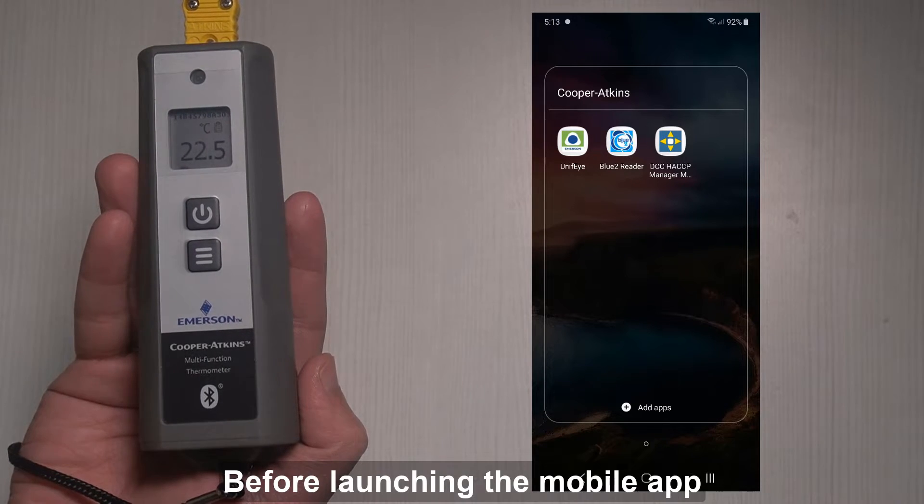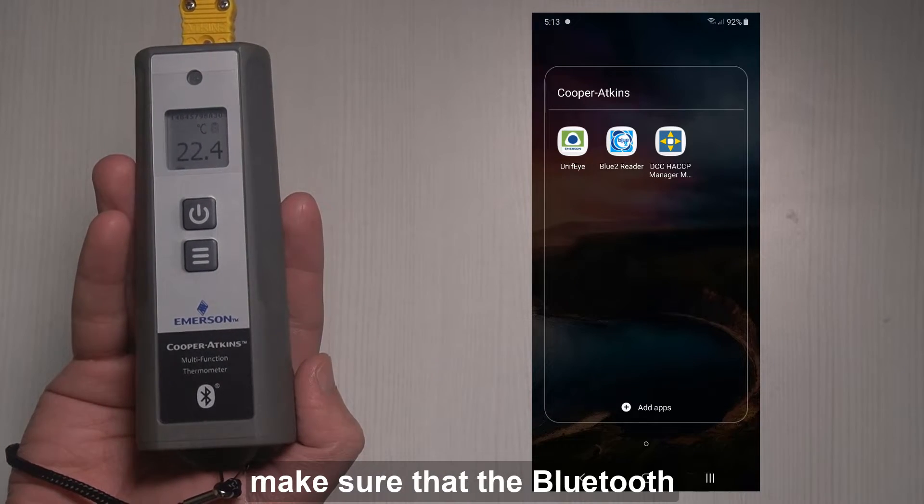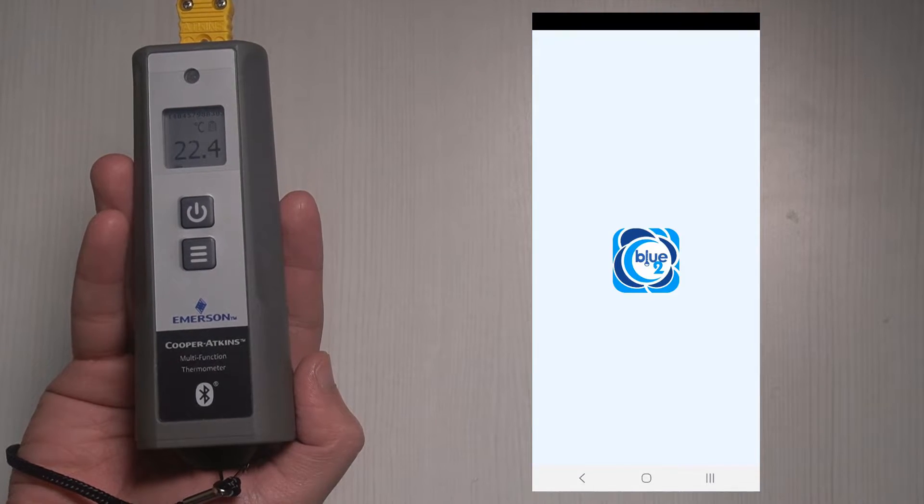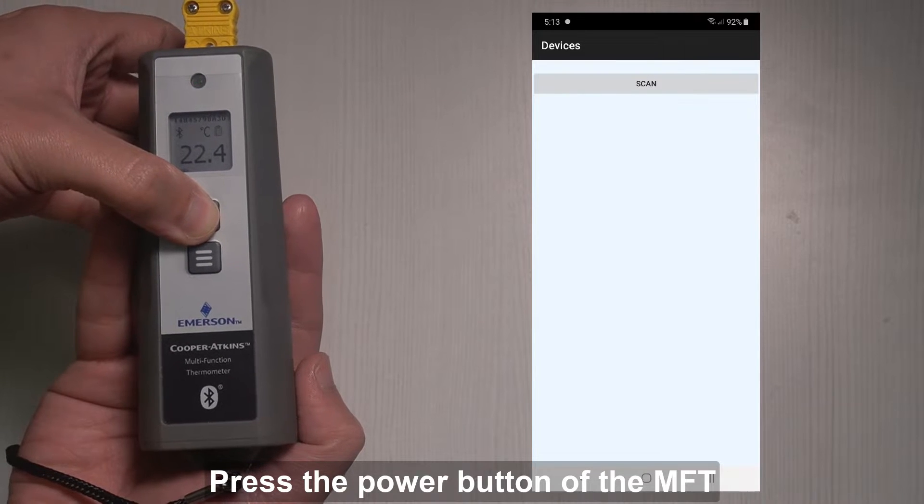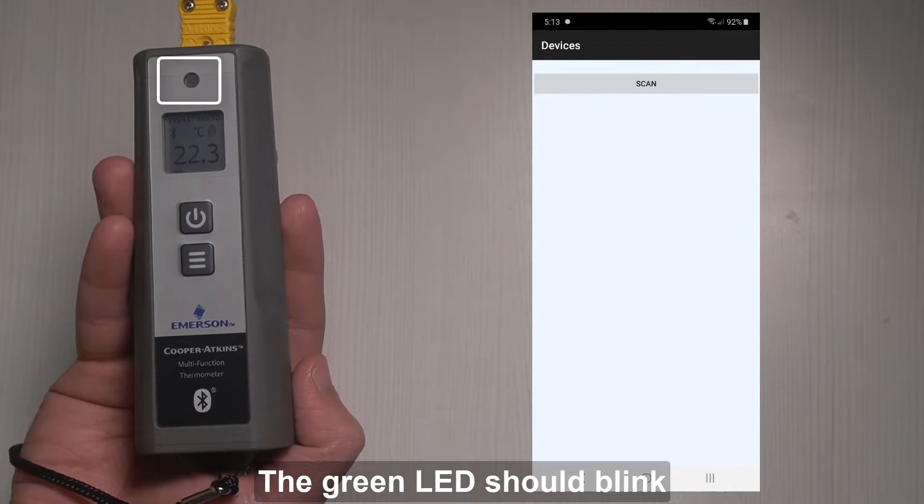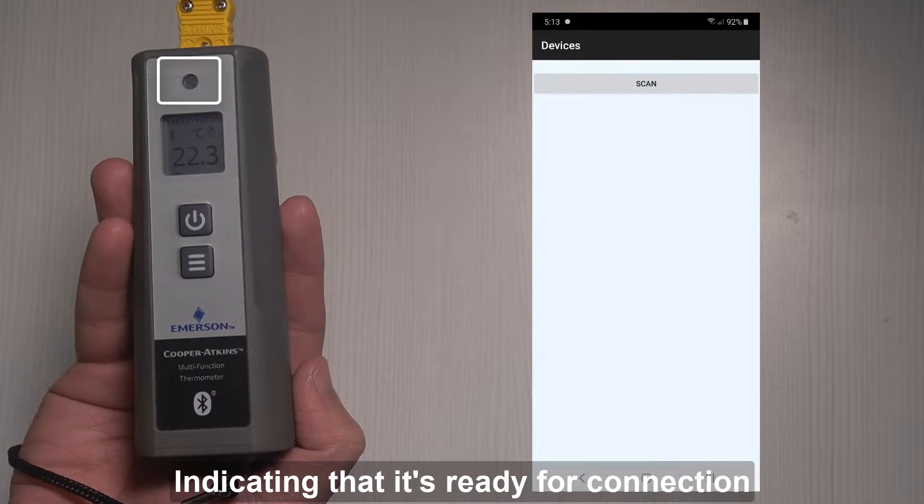Before launching the mobile app, make sure that the Bluetooth of the mobile device is on. Once the Bluetooth app is ready, press the power button of the MFT. The green LED should blink, indicating that it is ready for connection.